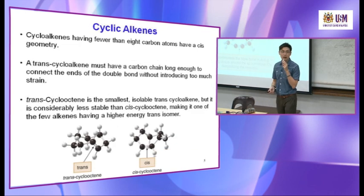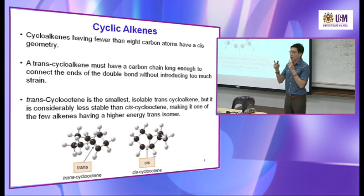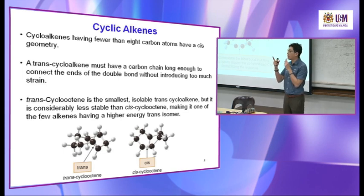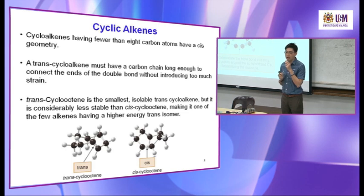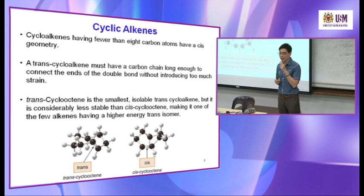Similar to transcycloalkenes, cycloalkynes with small rings are unstable because they create a lot of ring strain. Cyclooctyne — an 8-carbon ring — is the smallest isolable cycloalkyne.